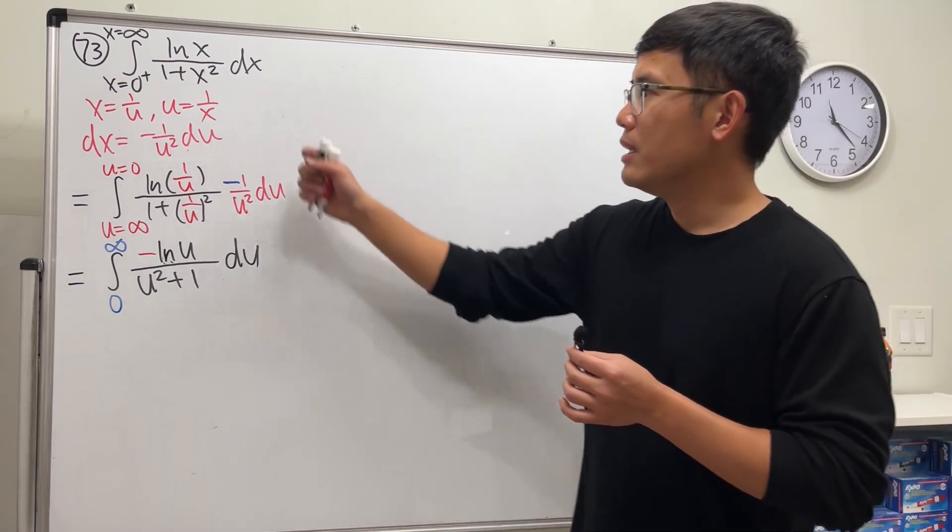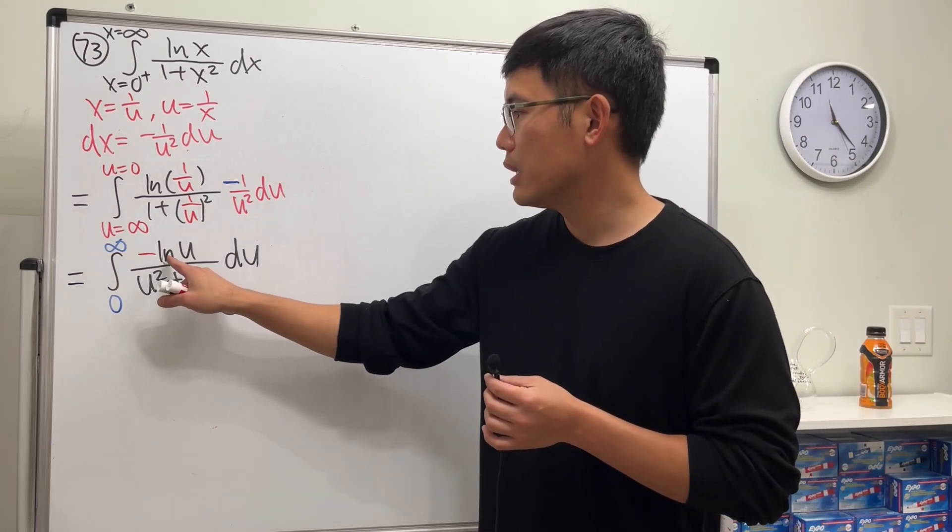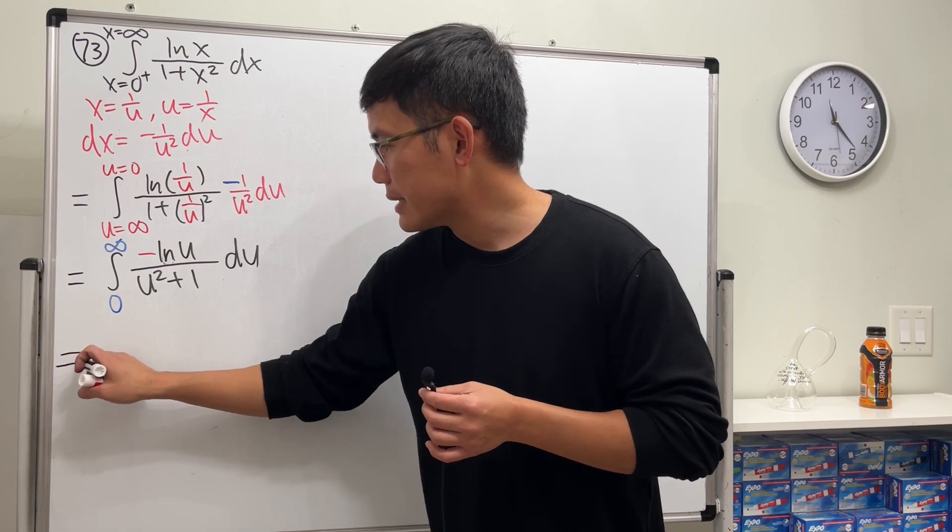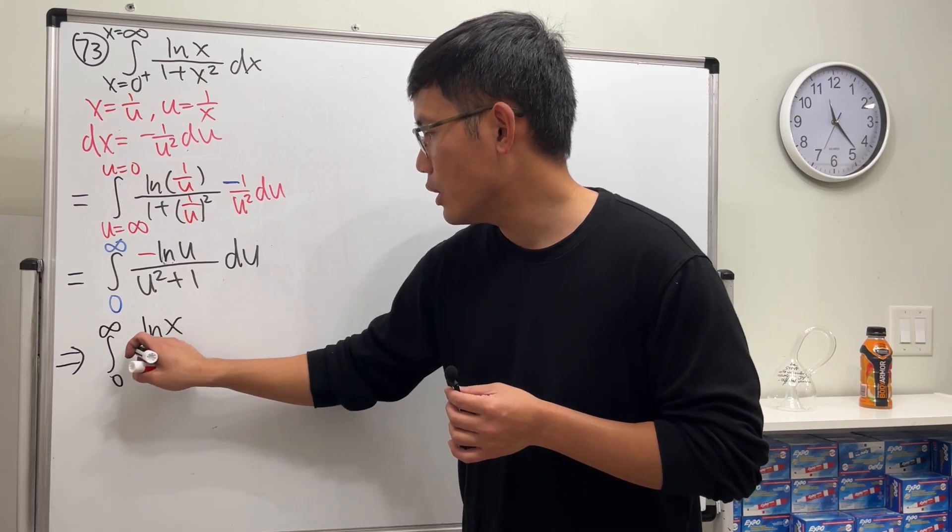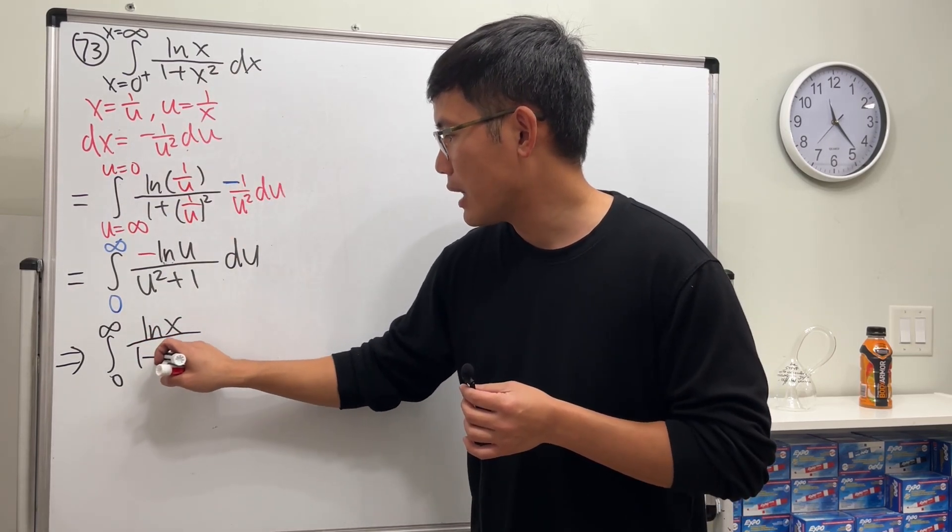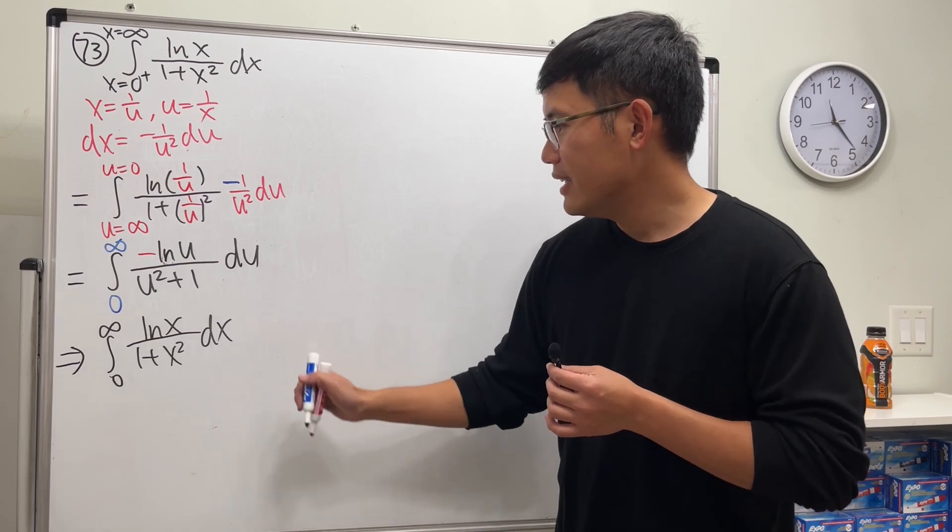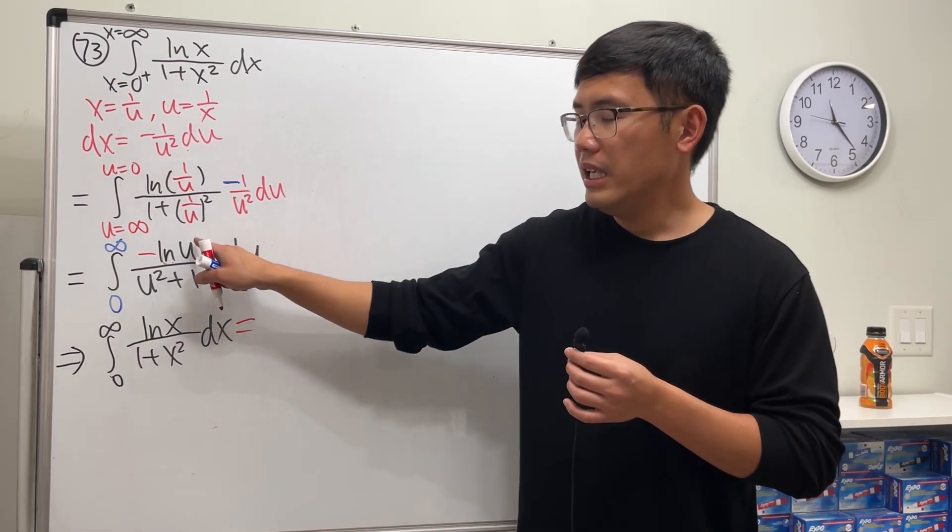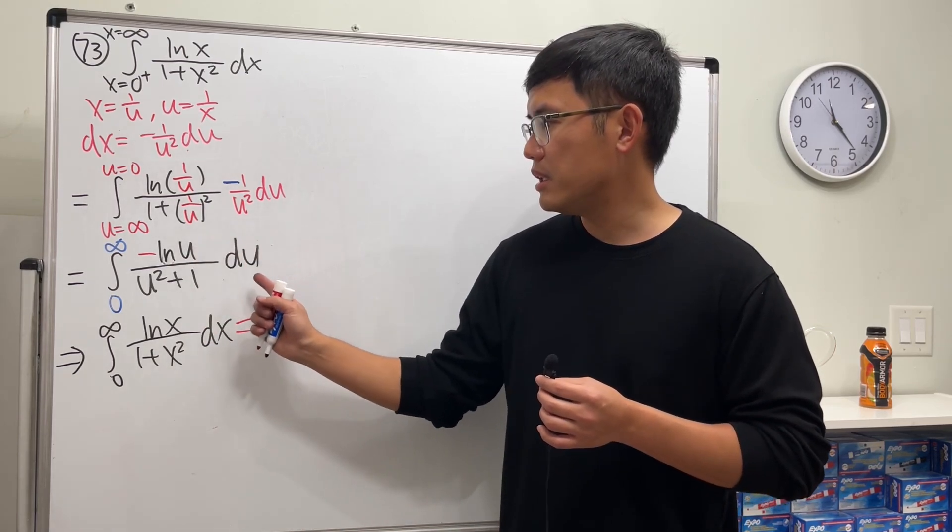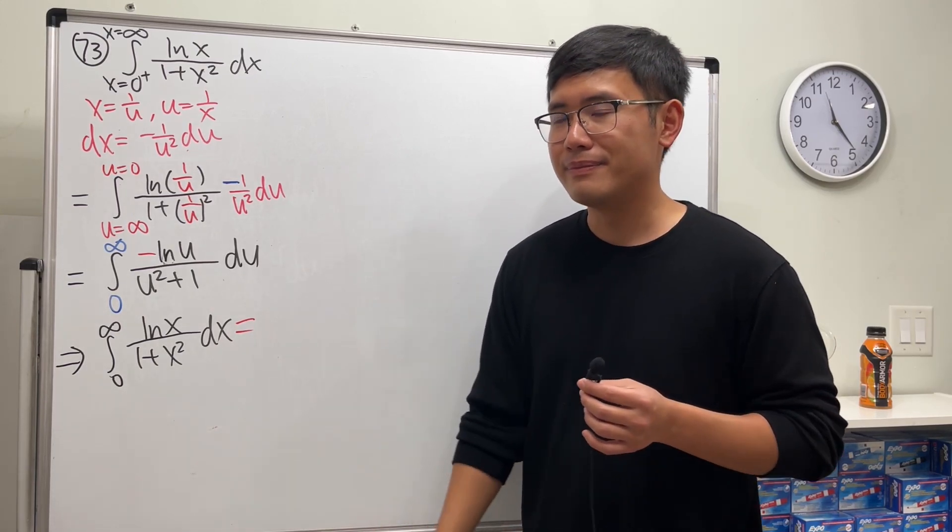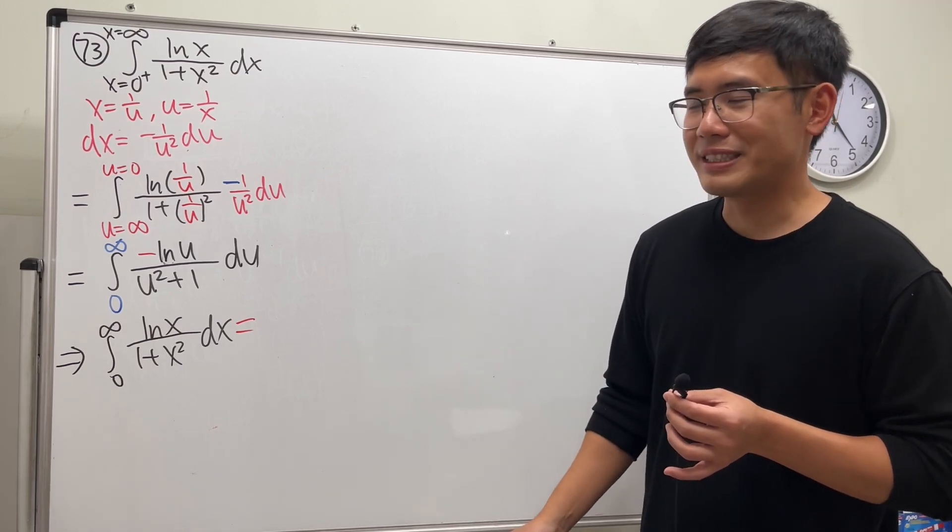Have a look ladies and gentlemen, this is equal to that. This is equal to its negative version. That's kind of cool. So what this is saying is that the integral going from 0 to infinity ln x over 1 plus x square dx, this right here is equal to, even though I put on u right here, but it's just a so-called dummy variable. It doesn't matter, you can put on t, you can put on x again. I know this is the part that a lot of people maybe don't even want to accept.